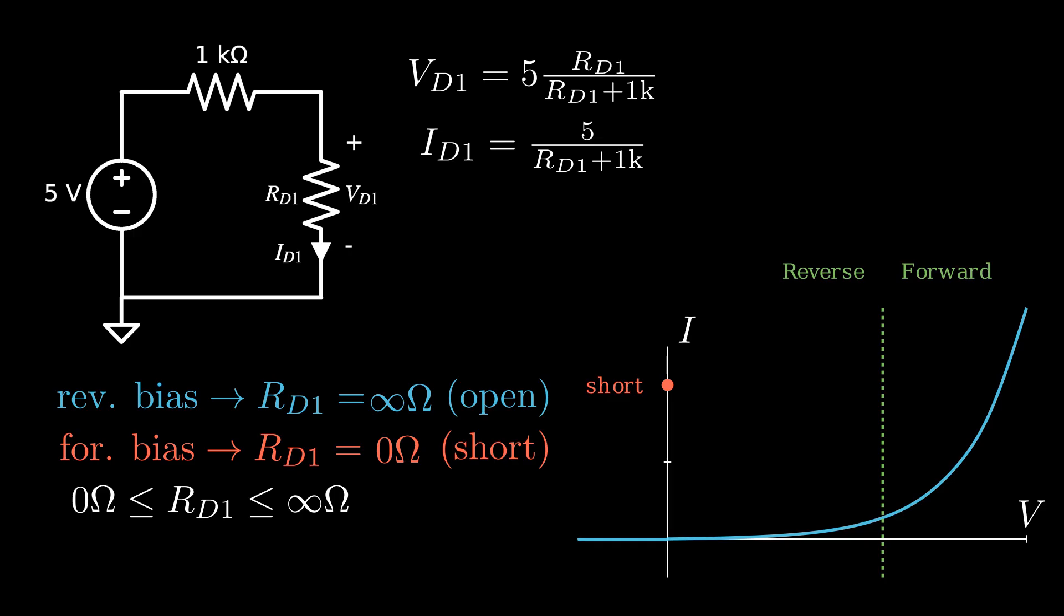Notice two things here. First, there is no voltage across a short, so the point has to lie on the vertical axis. Second, the point is located at a finite value equivalent to the current through the resistor, as if the diode was a short.